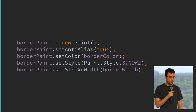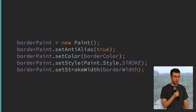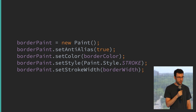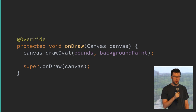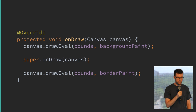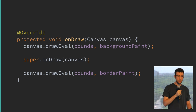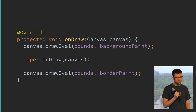For the border, it's basically the same thing — set the paint, set the color, set the style to stroke this time, and set our stroke width, which in our example is one pixel. Then in onDraw, we draw another oval. We want the border drawn on top of the image, so we do it after the super call.